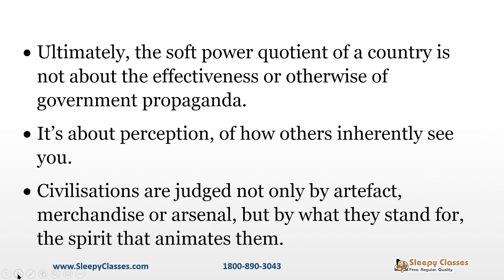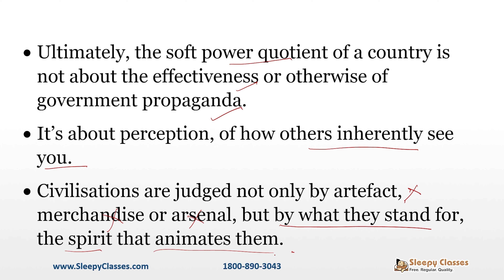Soft power quotient जो एक country का होता है, वो आता कहां से है? The soft power quotient of a country is not about effectiveness or propaganda. Soft power का मतलब यह नहीं कि India ने क्या करवा लिया या कोई भी country ने क्या करवाया. Soft power authority एक country derive करती है from how other countries inherently see you — दुनिया आपको कैसे perceive करती है. एक civilization की प्रतिष्ठा और मान-सम्मान उसके artifacts से नहीं, merchandise से नहीं, arsenal से नहीं — by what they stand for and the spirit that animates them. वो किस चीज के लिए खड़े हैं, और उस चीज के outputs कितने हैं.